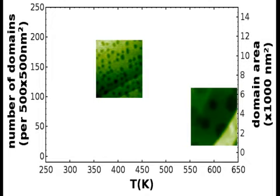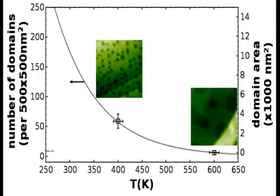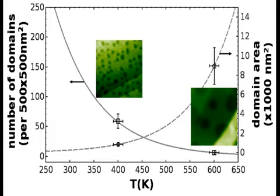Imaging several different flakes shows the trend that the number of domains decreases as a function of temperature, while the average size of water-free domains increases, resulting in two-dimensional Oswald ripening of the water-free domains.